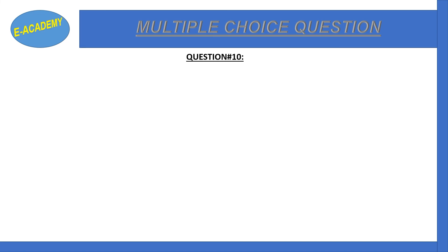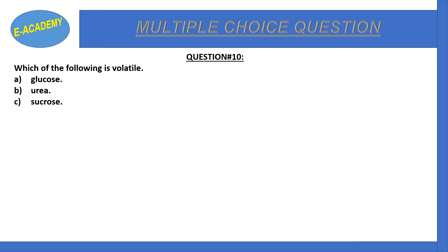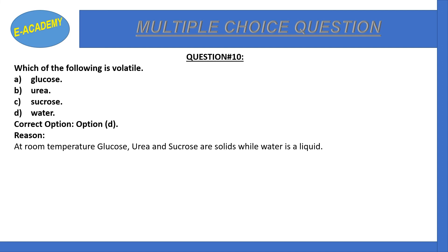Question number 10: Which of the following is volatile? a) glucose, b) urea, c) sucrose, d) water. Correct option is d) water. At room temperature, glucose, urea, and sucrose are solids, while water is liquid at room temperature, making water the volatile substance among these options.